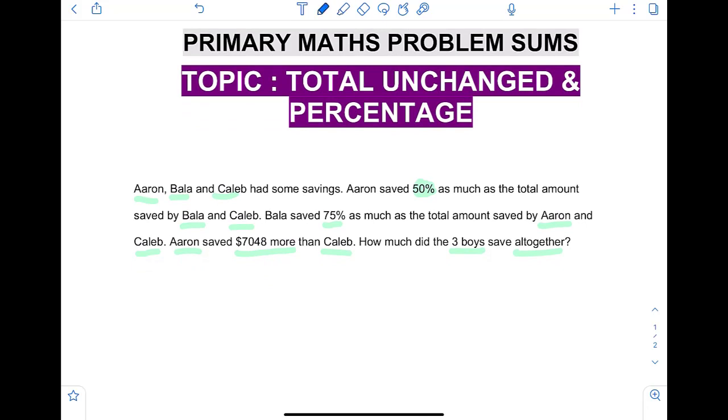Now, to do this question, first step you can do is to convert the percentage into a fraction. It's far easier to understand the fraction. So, half. Aaron saved half as much as the total saved by Bala and Caleb, which means that Aaron is to Bala and Caleb will be 1 is to 2. 1 will belong to Aaron. 2 will belong to Bala and Caleb.